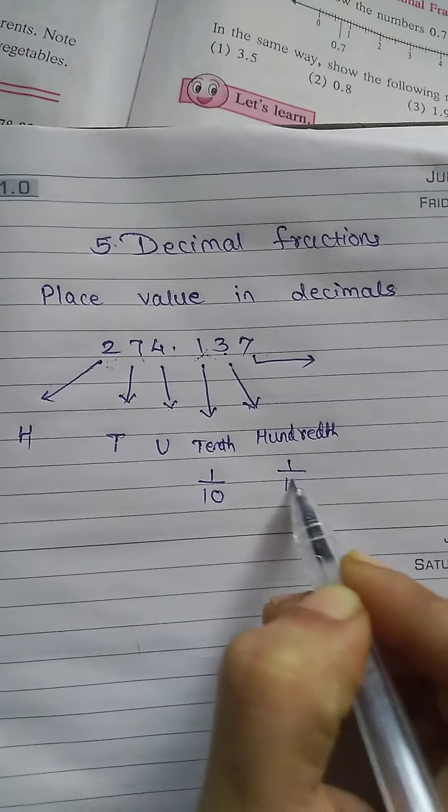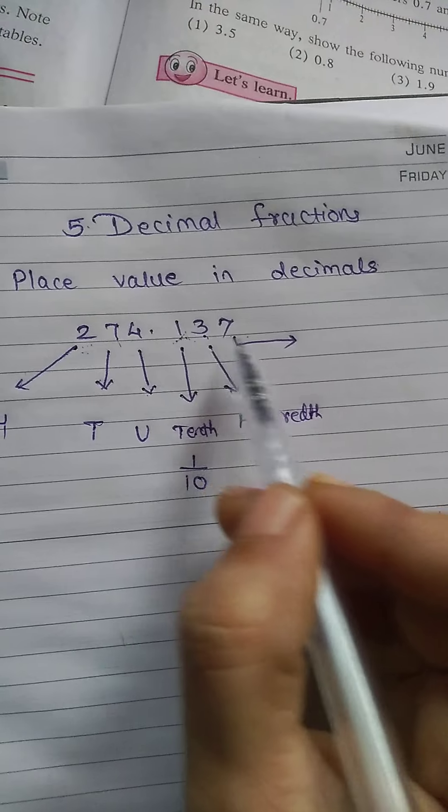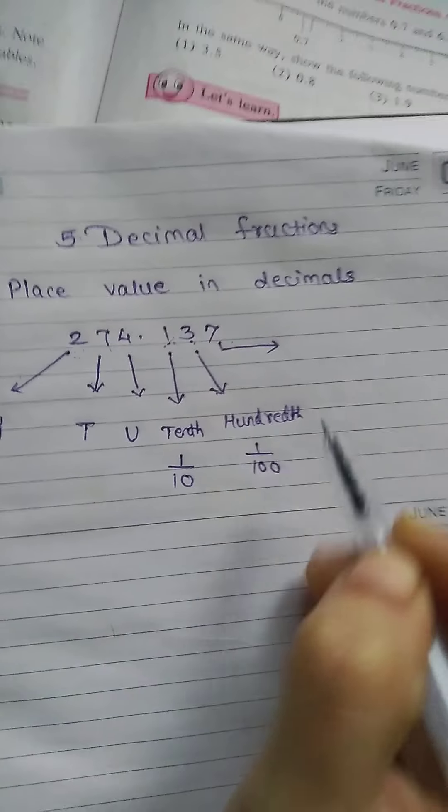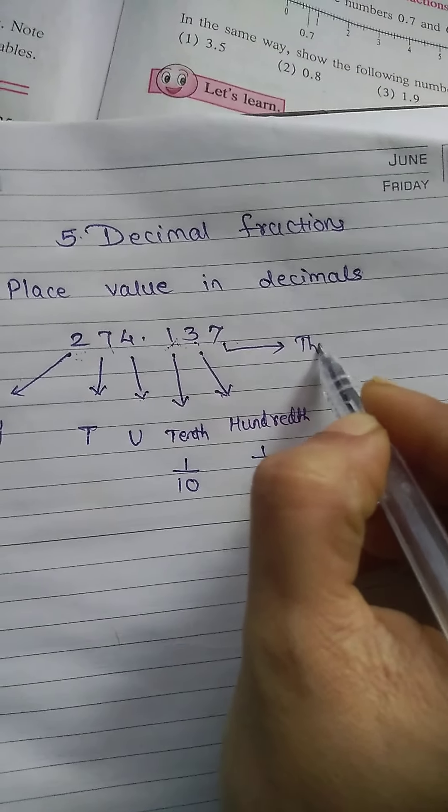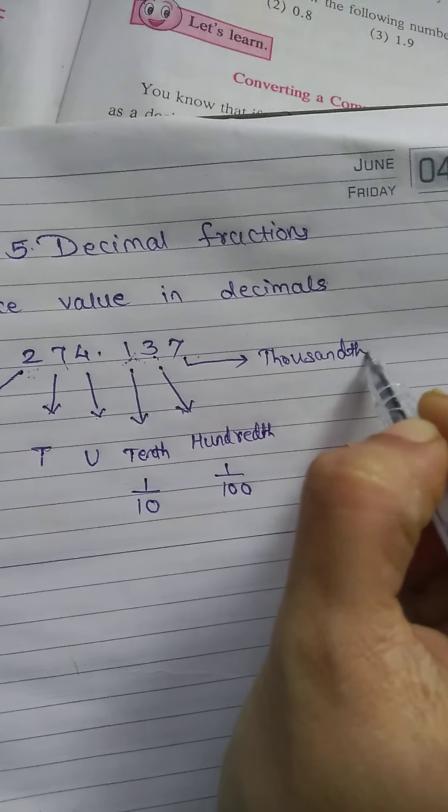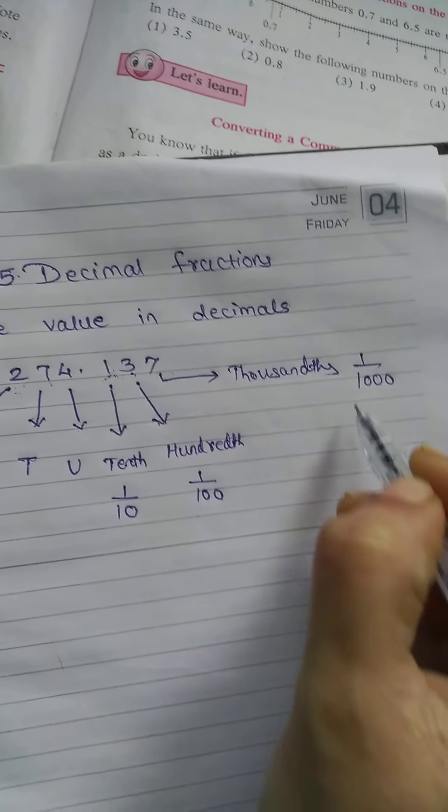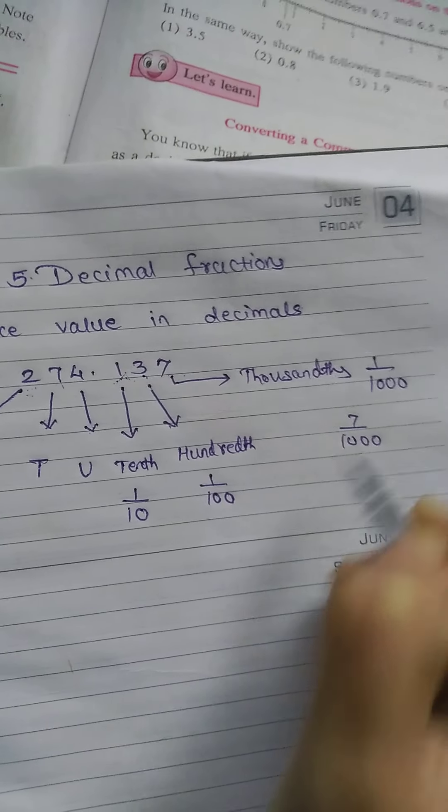The place value of this 3 will be hundredth, which is 1 upon 100. Now here it is 3, so it will be 3 upon 100. And this 7 - continuing ten, hundred, thousand - so it will be 1 upon 1000, which means 7 upon 1000.